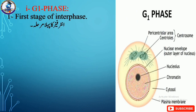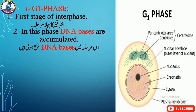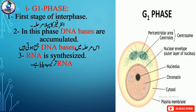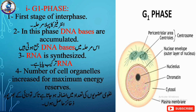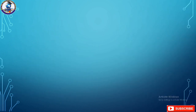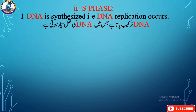The first stage of interphase is G1 phase. G1 phase is the first stage of interphase. In this phase, DNA bases are accumulated, RNA is synthesized, and the number of cell organelles increases or duplicates for maximum energy reserves.